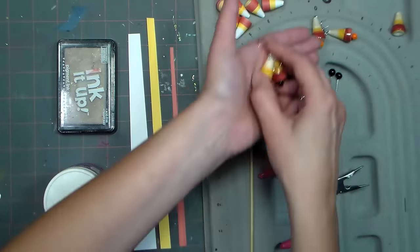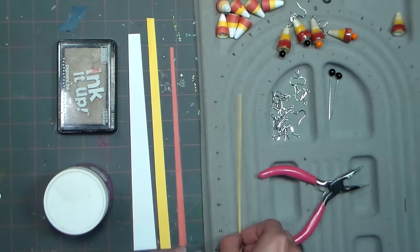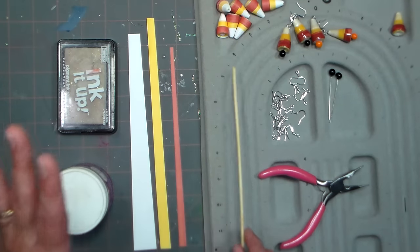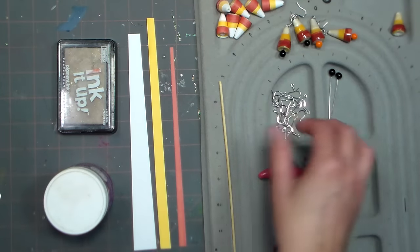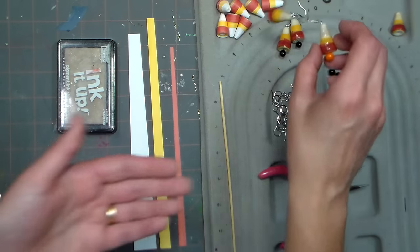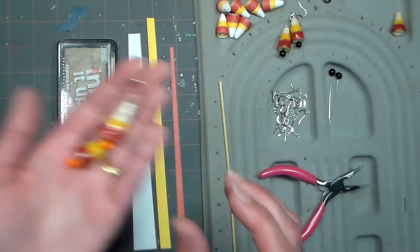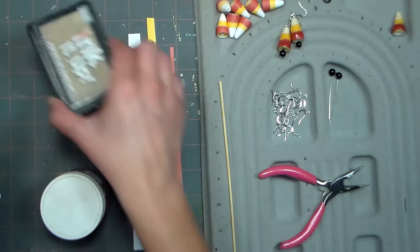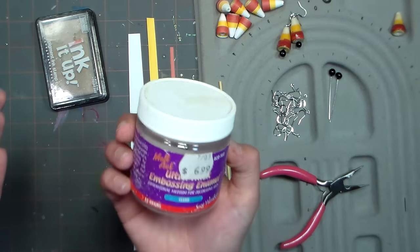We're gonna need some paper, a skewer to make our bead on or a toothpick, and some basic jewelry tools which I will go over in a minute. If you want your beads to be glossy like this you're gonna need clear embossing ink and embossing powder.